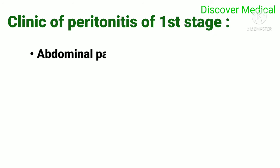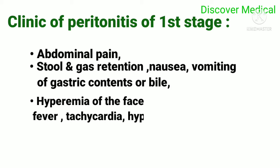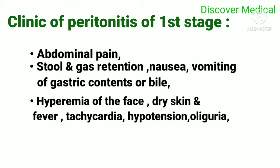Clinic of peritonitis of the first stage: abdominal pain, stool and gas retention, nausea, vomiting of gastric contents or bile, hyperemia of the face, dry skin and fever, tachycardia, hypotension, oliguria, and peritoneum irritation.